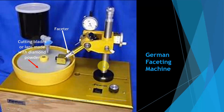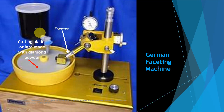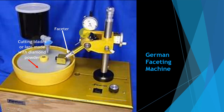This is the German machine. The faceter is here, and the up-and-down moving rod is this one. This is the diamond powder blade, rotating horizontally, with water dropping here. The faceter touches the edge of the stone to shape or cut facets. This angle indicator shows what angle we are cutting — we can move it from here to here, 0 to 90 degrees, and adjust the angle here as well. This is the German faceting machine.